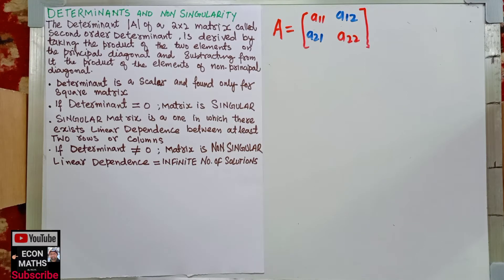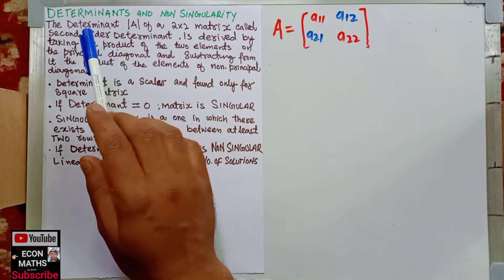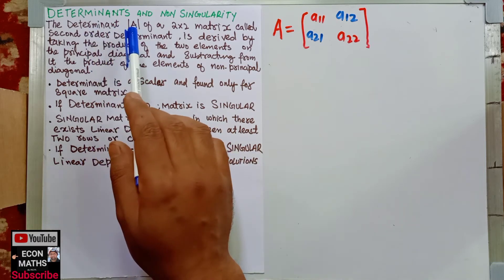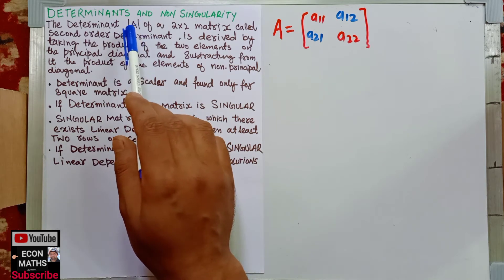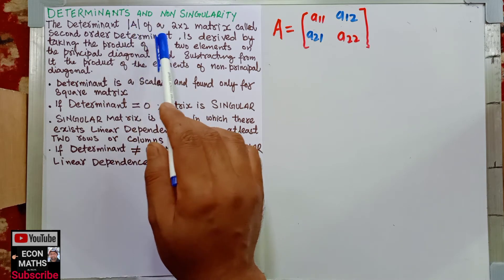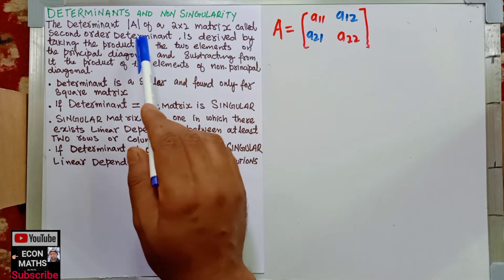Hi, this is Elal. In this video on the mathematical economics series, we will learn about the determinants and non-singularity of a matrix. The determinant, denoted by this symbol, of a 2 by 2 matrix is called a second order determinant.